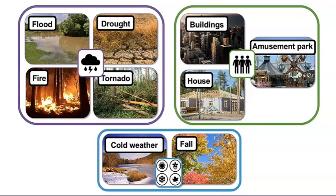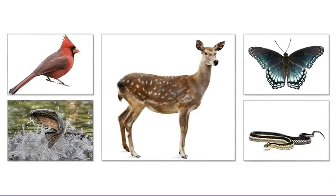So, now we have some ideas about how an environment can change. Some of the changes are short-term, but others, such as building a house, would change the environment for a long time. That makes me wonder. How do long-term changes in an environment affect the organisms that live there?